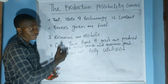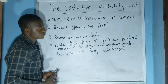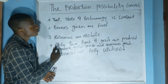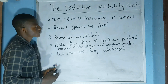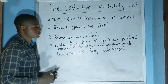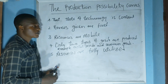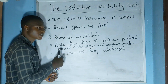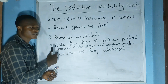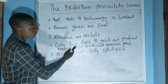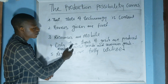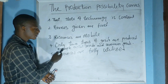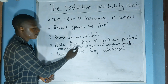The fourth assumption is that only two types of goods are produced. From the definition, the production possibility curve shows the possible combination of two goods that a country can produce given all its resources — for example, capital goods and consumer goods.